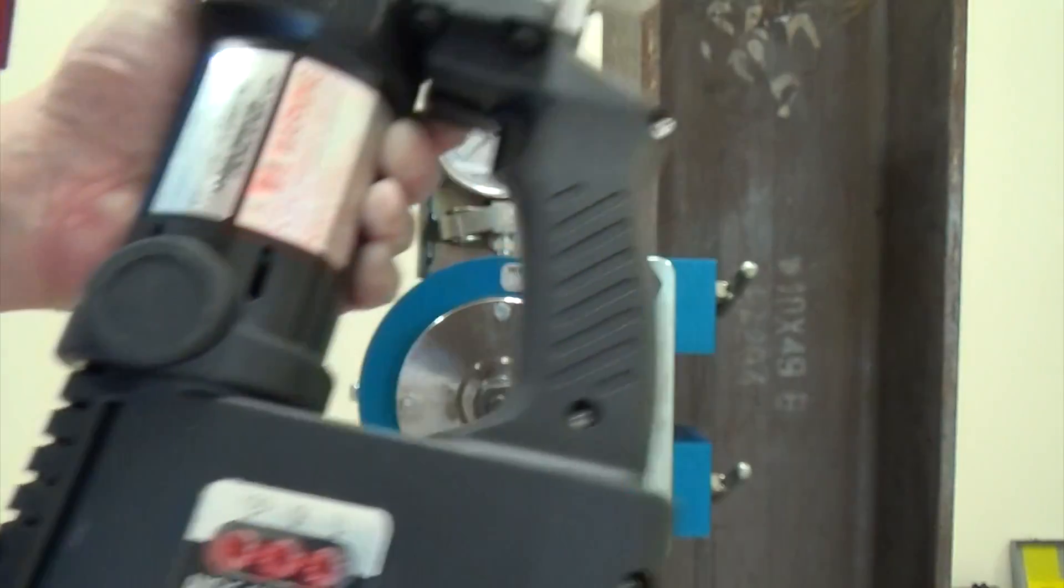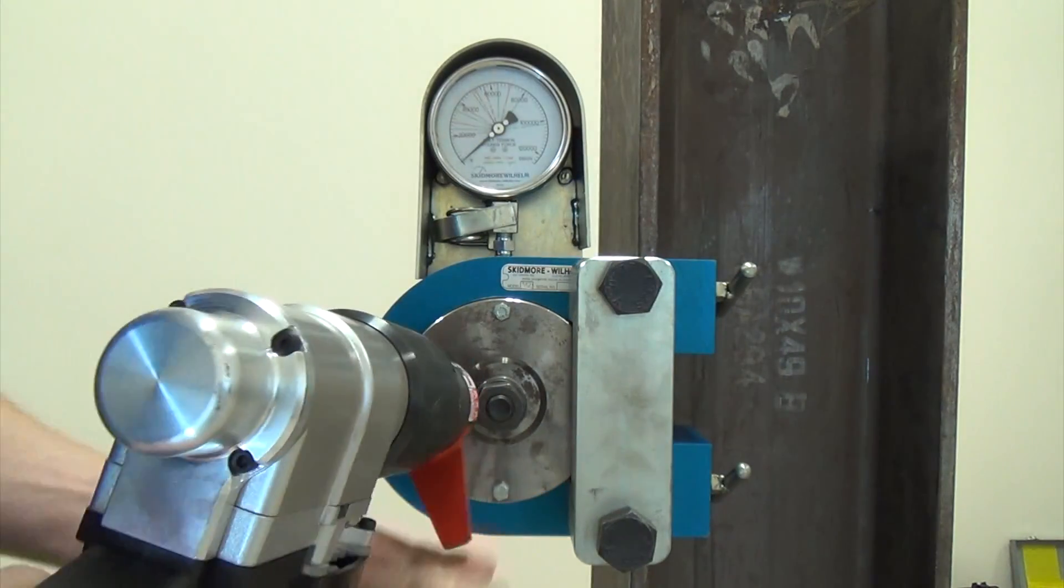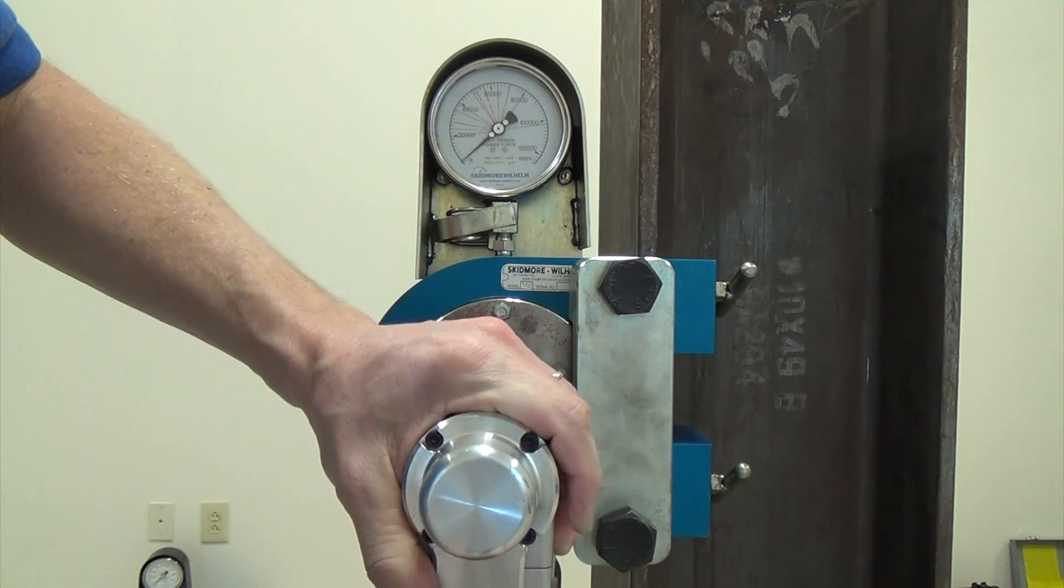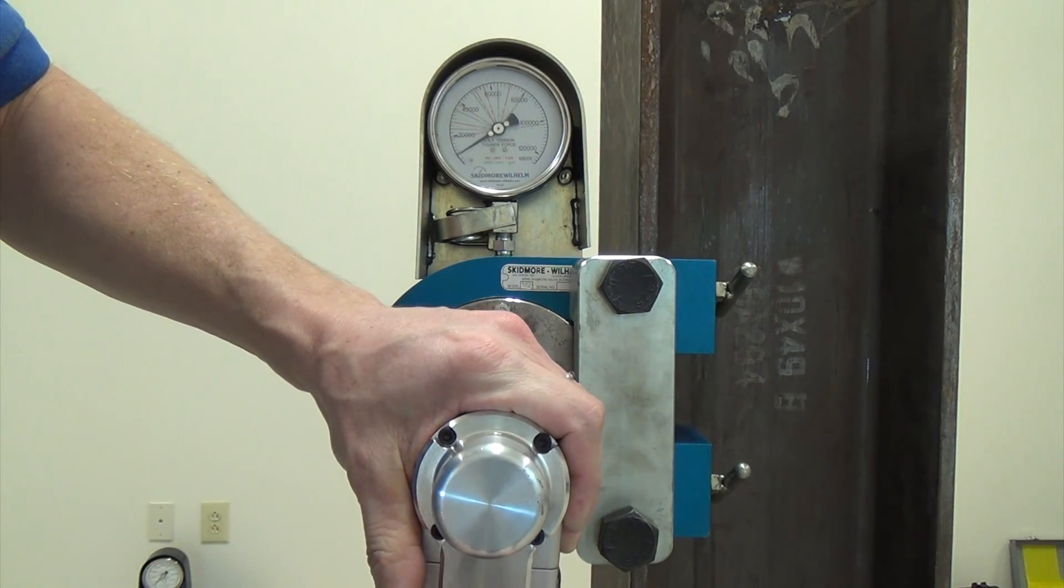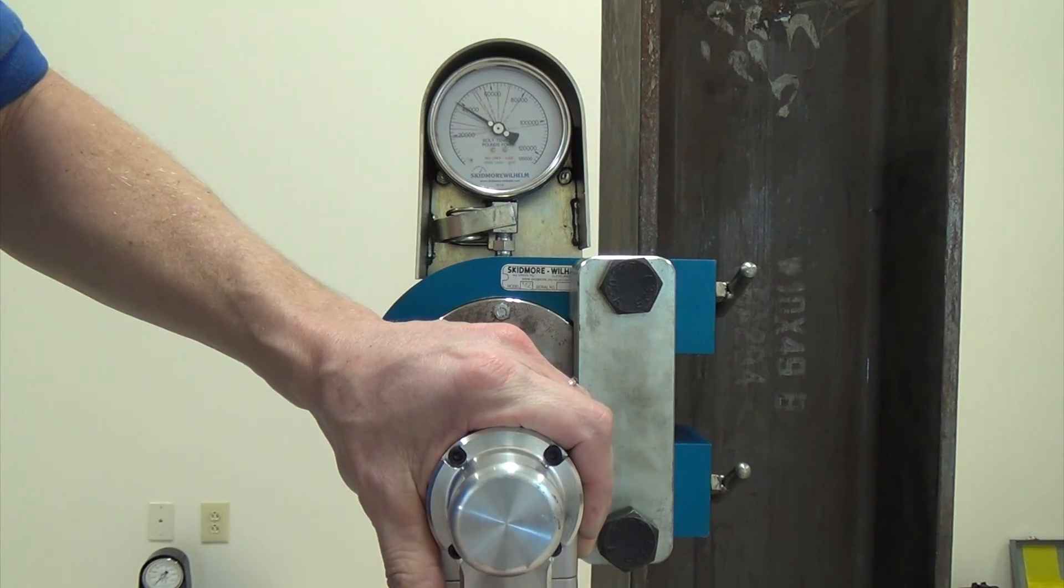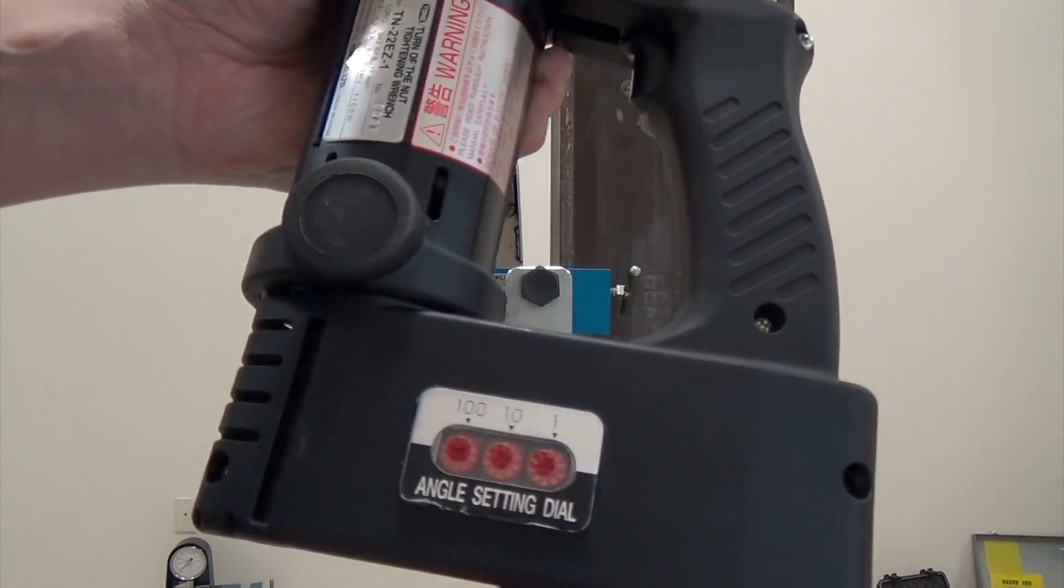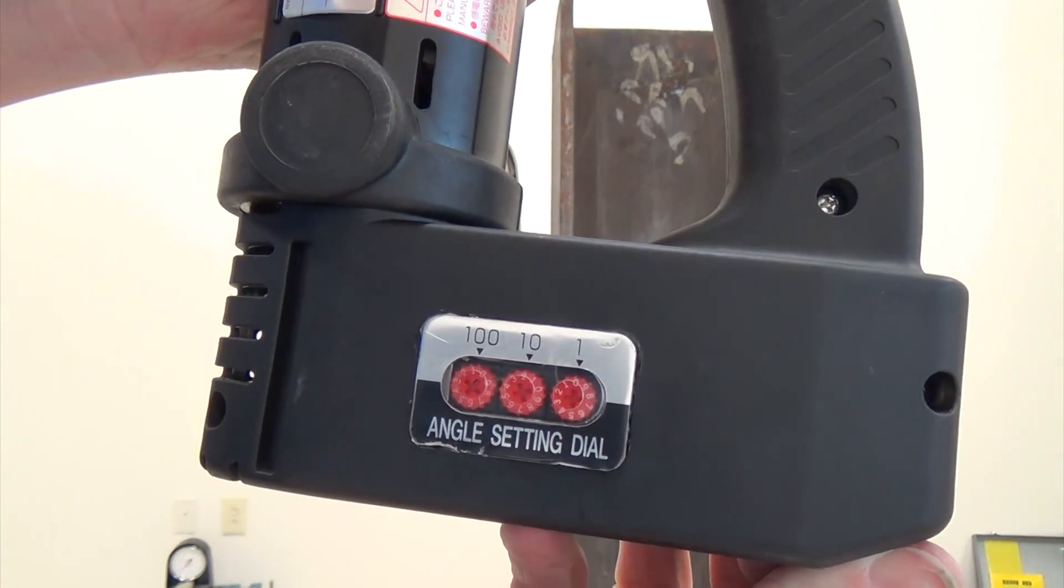In these examples, it can be seen that even without match marking the fastener, a proper turn is executed and bolt tension of 39,000 pounds force is achieved. This shows the precision and repeatability that can be trusted by specifying the exact turn required using the angle setting dial.